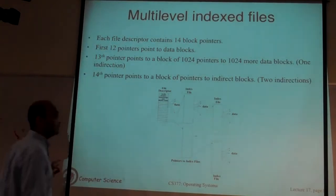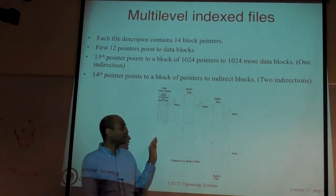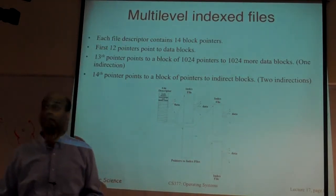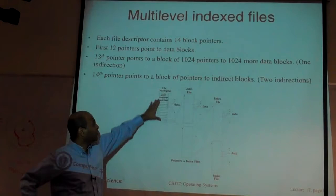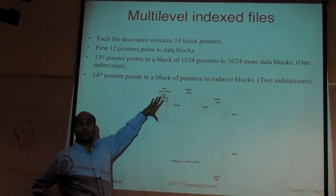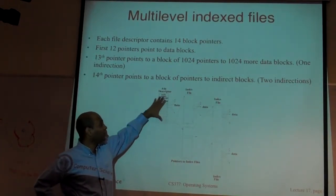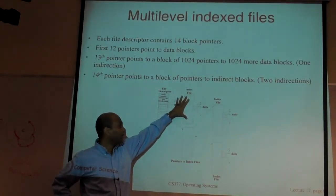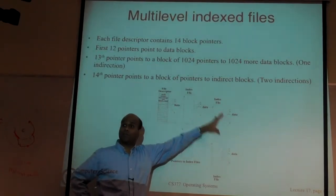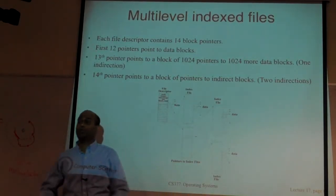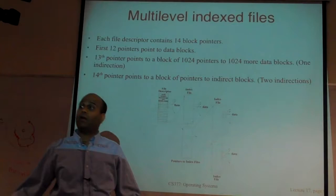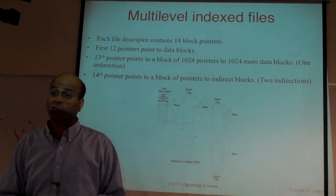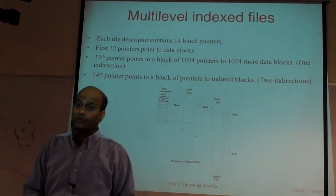The maximum file size with two levels of indirection: 12 direct + 1,024 single-indirect + 1,024² double-indirect blocks. With triple indirection you get up to 1,024³ blocks times the block size — many gigabytes. You don't need to know the file size in advance; the descriptor grows incrementally. Directories use the same iNode structure — directories are just special files containing names of other files.